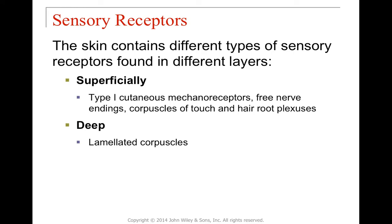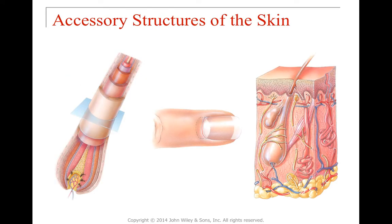There are two different types of tactile sensory receptors. The superficial type 1 mechanoreceptors are for touch or pressure, including the hair root plexus, which detects pressure and passes that information on. The deeper type are laminated corpuscles, better suited for detecting intense pressure changes rather than temperature changes.